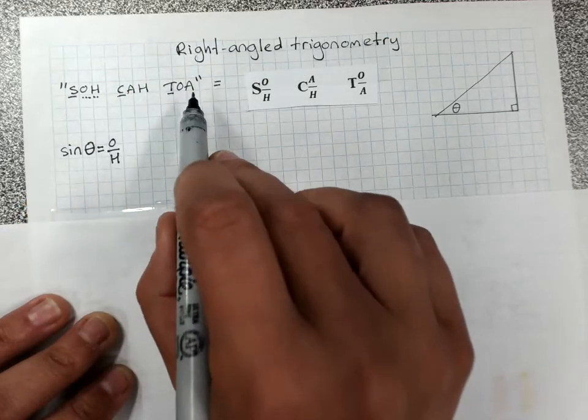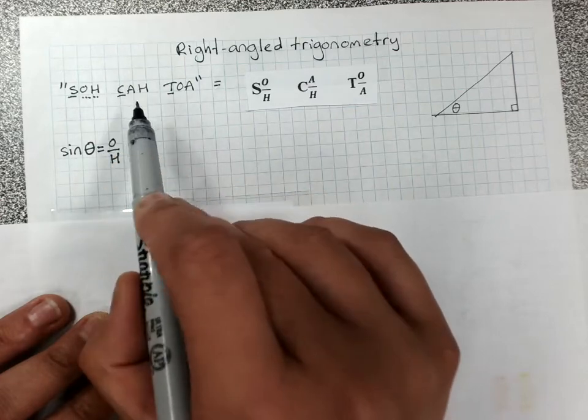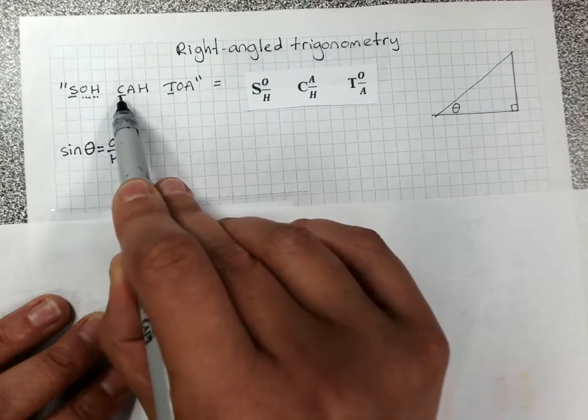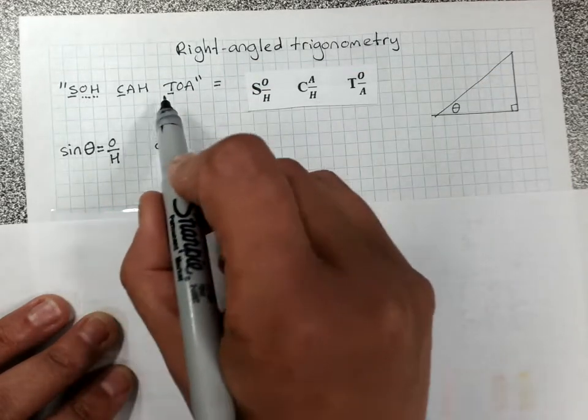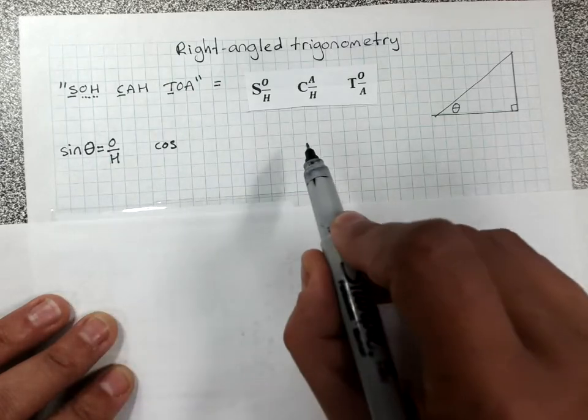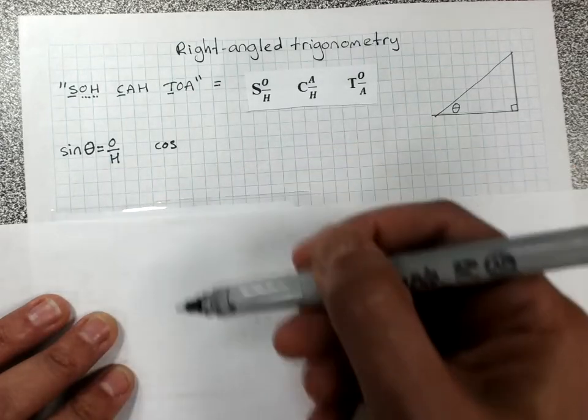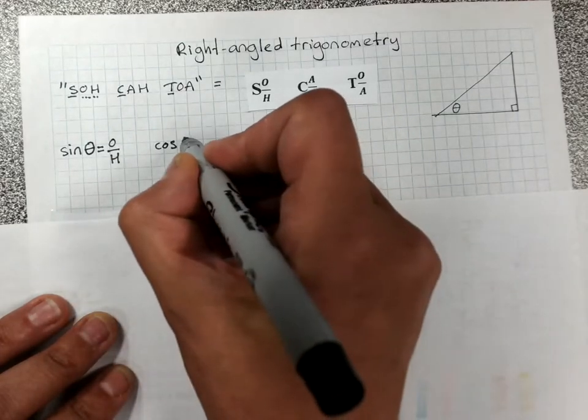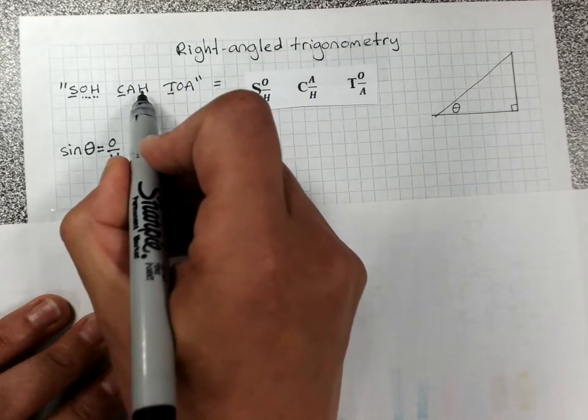So this is just reminding you how to get these ratios. This is the next formula, or ratio. C stands for cos. So if we step through this at the start and write these down, they'll be there in the test when we need them. Write them down before you look at the questions. Cos, don't forget to put theta equals, and then A over H.